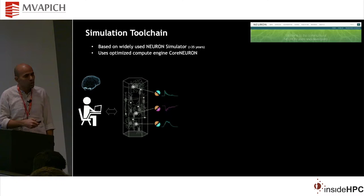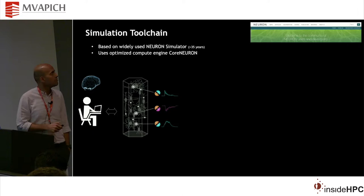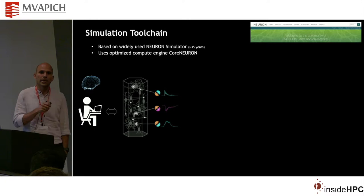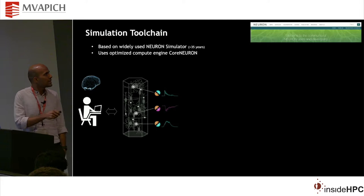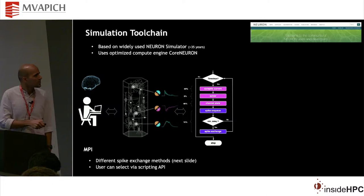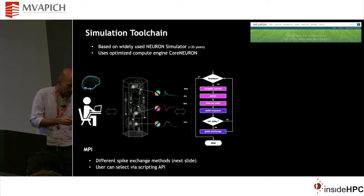Once you have this tissue, the next step is for neuroscientists to run various experiments on it. Our simulation tool chain is based on the widely used NEURON software, developed for more than 35 years, primarily at Yale University, and we have been collaborating on it for more than 10 to 15 years. We are optimizing the core algorithm of this software into something called CoreNEURON, which is the compute library we use. Most of the execution time is spent updating the state of individual neurons; only 10 to 15 percent is for exchanging spikes from one neuron to another.